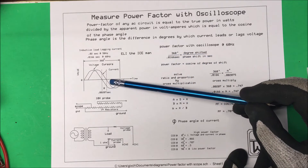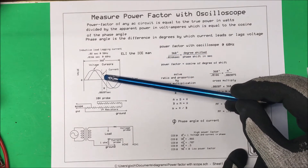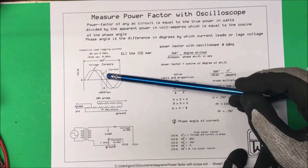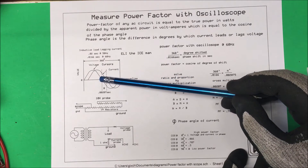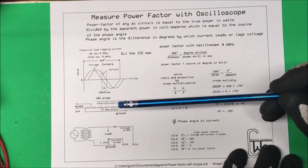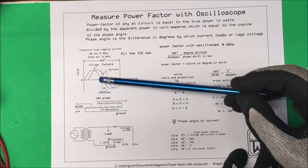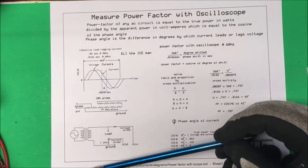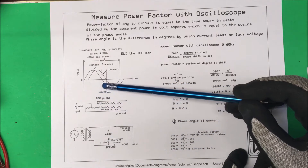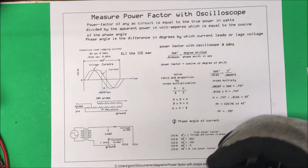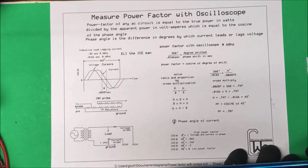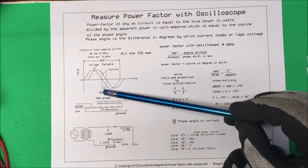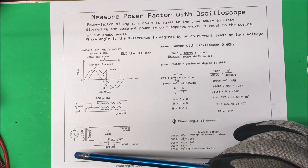We want to find the difference in time between these two sine waves, so we look at the zero crossing point and place a couple of cursors there. The scope shows 0.0027 seconds between the two crossings. We want to convert this to degrees and then take the cosine of that to find our power factor.